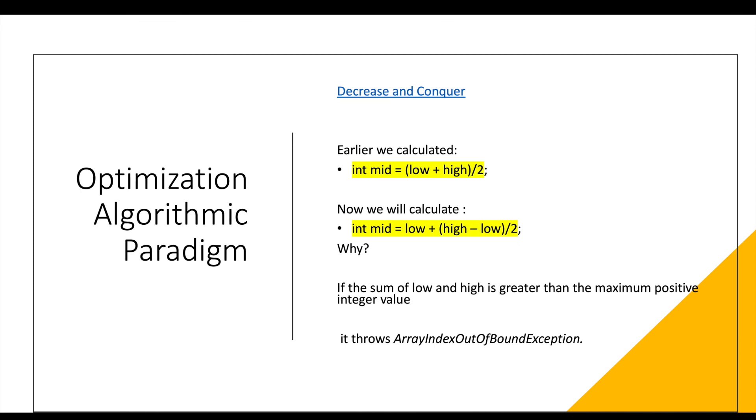So now we are going to wrap up today's session by discussing about this algorithmic paradigm in which we are going to discuss how are we calculating the mid earlier and how are we supposed to calculate the mid. So in the dry run, we were trying to calculate the mid using the above formula low plus high divided by 2. But there is a drawback of doing this and that is if the values of low and high are such that adding them causes an overflow of the integer data type. Like if it exceeds the maximum positive value of the integer, then in that case we will receive an exception.